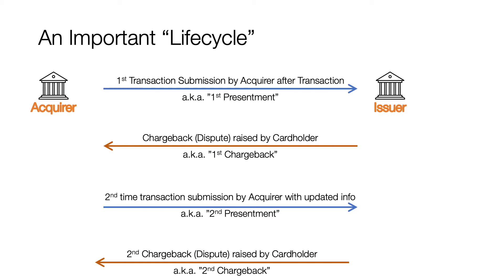If the issue between the issuer and the acquirer doesn't get resolved, it is settled via arbitration, though that is very rare. Usually chargebacks get settled within the first chargeback or second presentment at most. We will look at the dispute lifecycle in a separate video, but this is an important lifecycle to understand given we are discussing clearing and settlement.